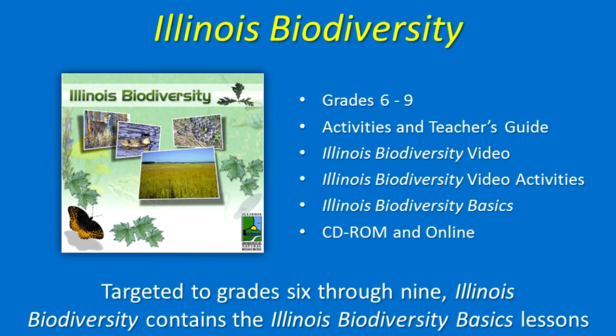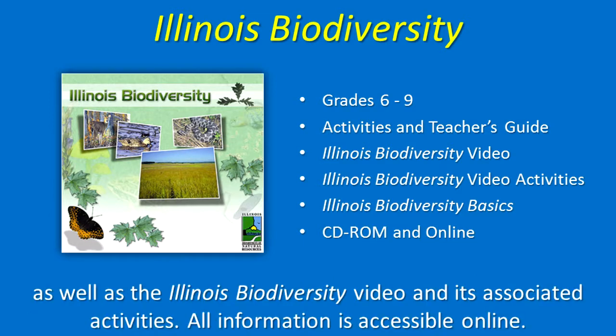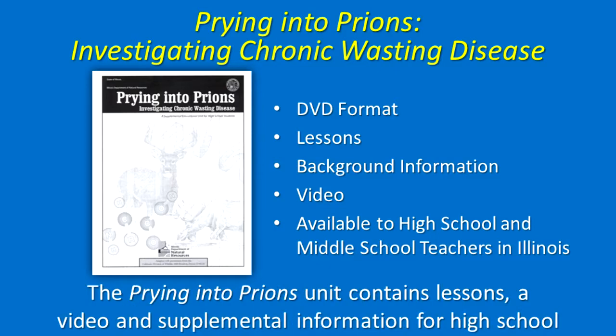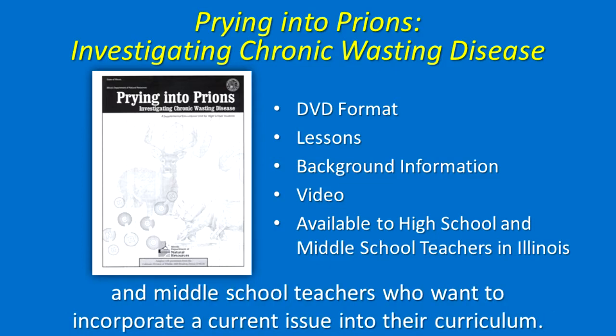All information is available for grades 6 through 9. Illinois Biodiversity contains the Illinois Biodiversity Basics lessons, as well as the Illinois Biodiversity video and its associated activities. All information is accessible online. Chronic Wasting Disease is a prion disease that is present in Illinois' white-tailed deer herd. The Prying into Prions unit contains lessons, a video, and supplemental information for high school and middle school teachers who want to incorporate a current issue into their curriculum.